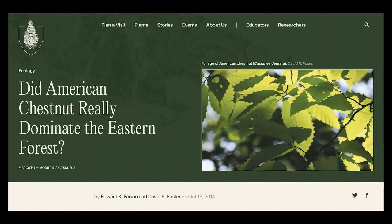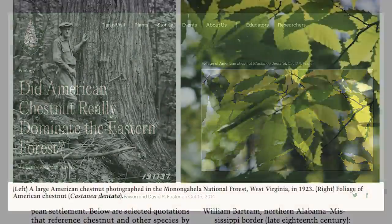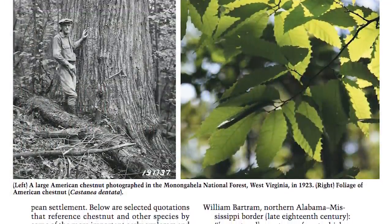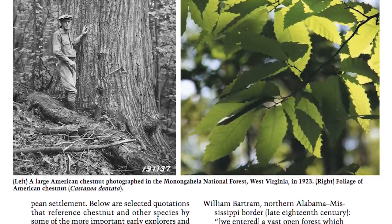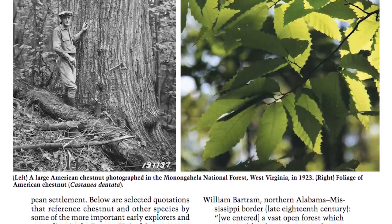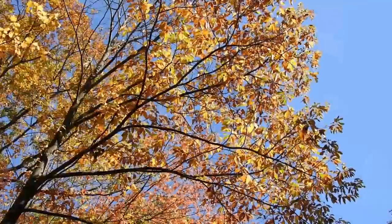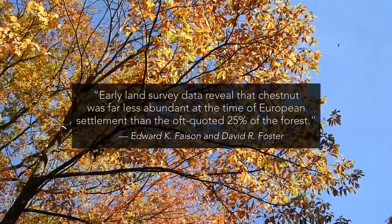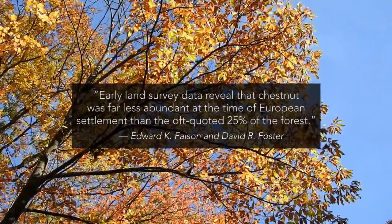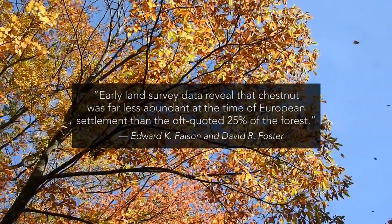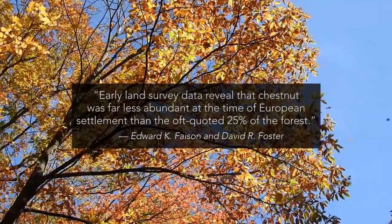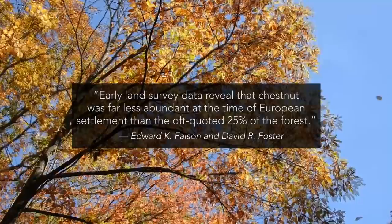A fantastic article was written on this very topic with the appropriate title, 'Did American Chestnut Really Dominate the Eastern Forest?' The authors, Edward K. Faison and David R. Foster, shared similar information on American chestnut's less dominant role in early eastern forests, stating that early land survey data revealed chestnut was far less abundant at the time of European settlement than the oft-quoted 25 percent of the forest.